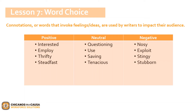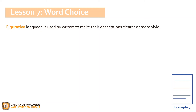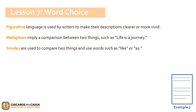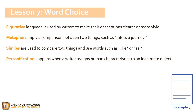Writers also utilize other types of language to emphasize their points. First, figurative language is used by writers to make their descriptions clearer or more vivid. Metaphors imply a comparison between two things, such as the quote 'life is a journey.' Similes are used to compare two things and use words such as 'like' or 'as.' Lastly, personification happens when a writer assigns human characteristics to an inanimate object. Let's look at a few examples of these word choices in Example 7, found on page 74.